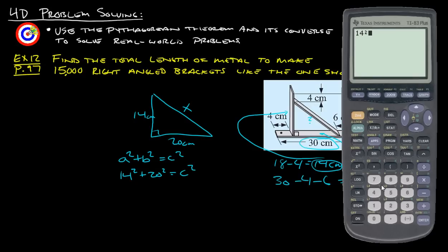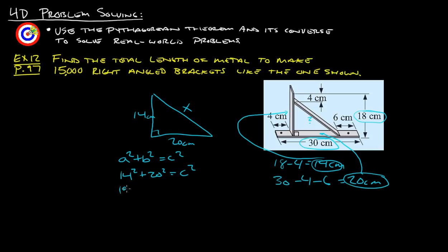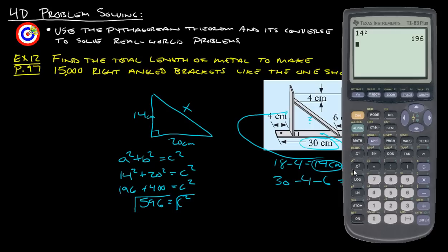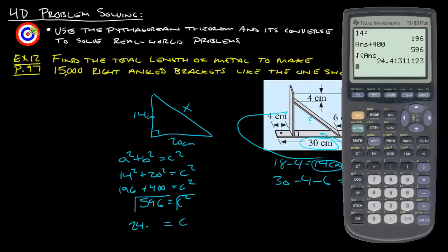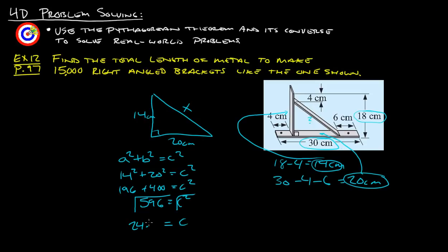14 squared is 196 plus 400 is c squared. That's 596 equals c squared. Then we take the square root of both of those. We take the square root of 596 and we get that this length here is 24.4 centimeters. Now we know this piece here is 24.4 centimeters.